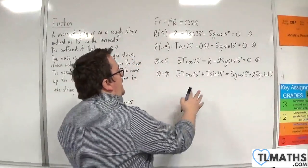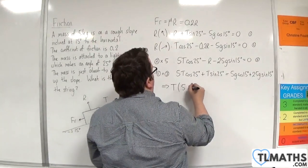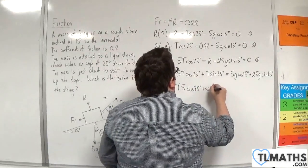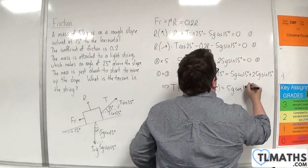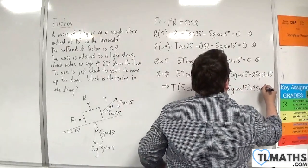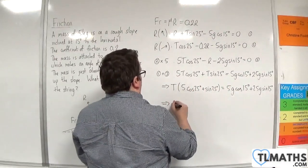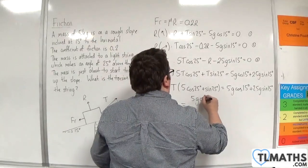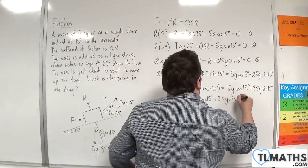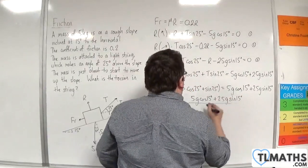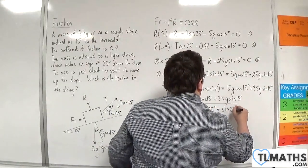Now, if I factorize the left-hand side, I can have T lots of 5 cosine 25 plus sine 25 is equal to the 5G cosine 15 plus 25G sine 15. So T has to be 5G cosine 15 degrees plus 25G sine 15 degrees divided by 5 cosine 25 degrees plus sine 25 degrees.